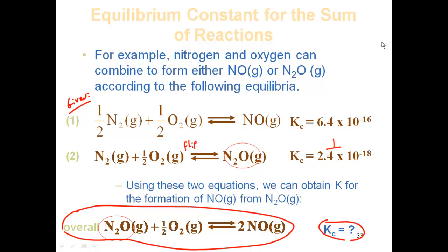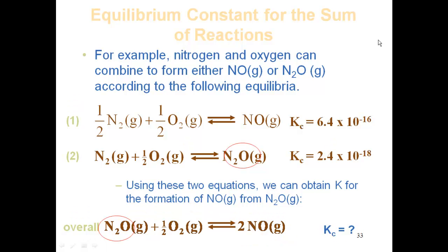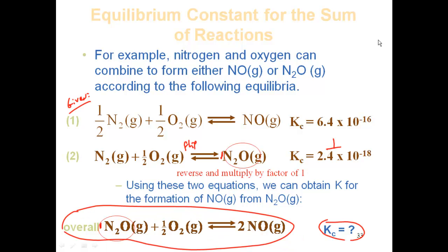Second question: is it the correct number of moles? In the target equation I need 1 mole of N2O, and the given equation also has 1 mole of N2O — correct. So I don't need to multiply by any factor. All I need to do is flip the reaction and take the reciprocal of K. I'll skip oxygen and move on.